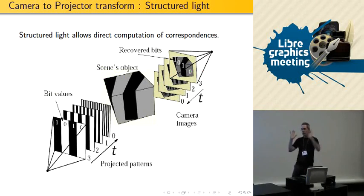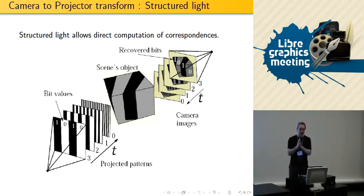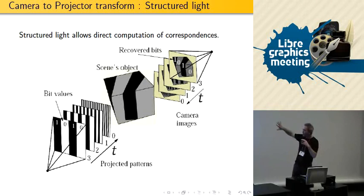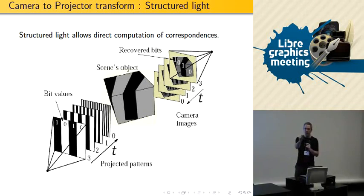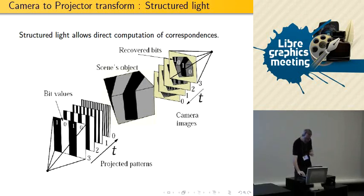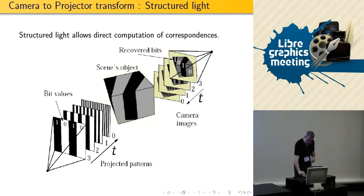How do you map from the projector to the camera? Everybody probably knows simple systems where you project a grid, take a picture, look at the distorted grid, and compute a mapping. That's a parametric mapping. In our case, we do something non-parametric: for every pixel of the camera, we find which projector goes there. We project bit patterns that encode the projector coordinates bit by bit.